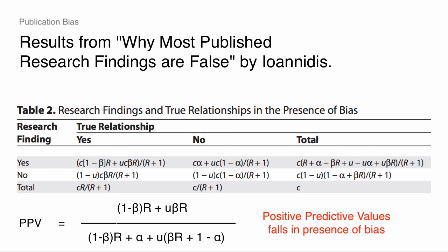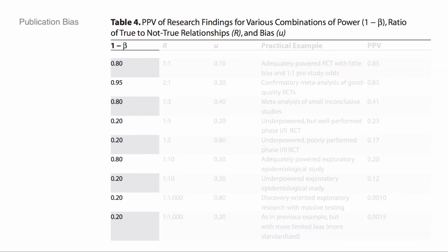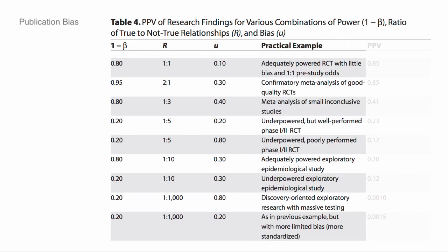Ioannidis lists out different combinations of power, R — this notion of plausibility — and bias, and gives examples in different literatures. It's very medical-focused, unfortunately. It would be neat to put together the equivalent for what our prior is in different social science fields. His best case is a well-powered study — 80% power — in a field where there's even odds of an effect, R equals 1, and maybe a little bias. Then if you see a result, you can be pretty confident it's true.